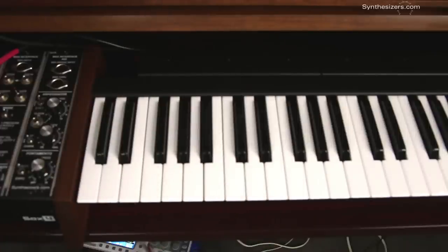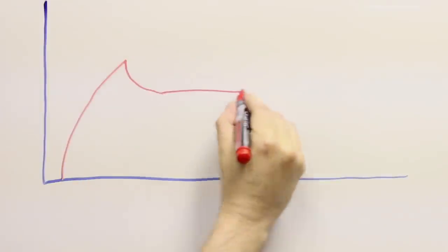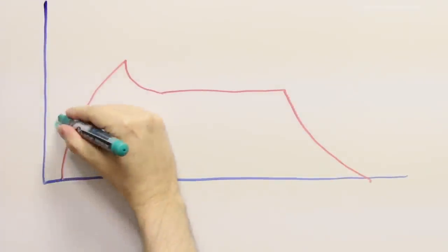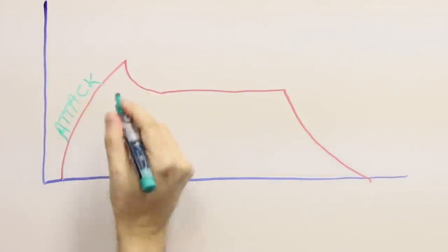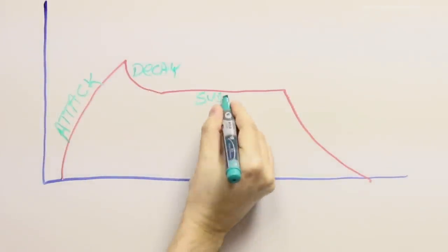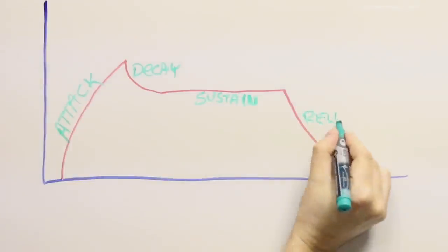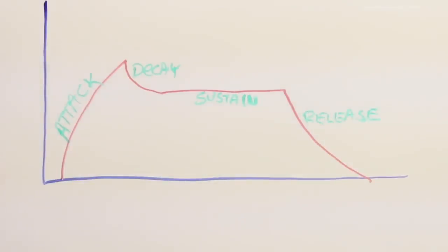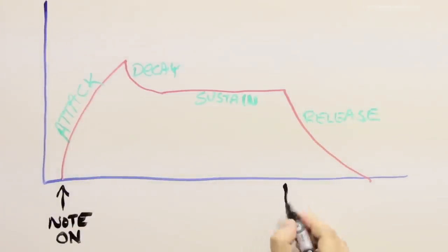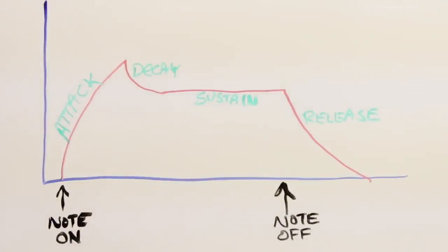Without envelopes we'd be stuck with static on-off sounds. A typical envelope has four sections. When a note starts, the attack phase begins — attack can be fast like a drum or slow like a flute. When the attack phase is finished, there's a decay phase which turns into the sustain level. This sustain level stays as long as the note is on. When the note is turned off, the release phase starts, and that can be fast or slow too.